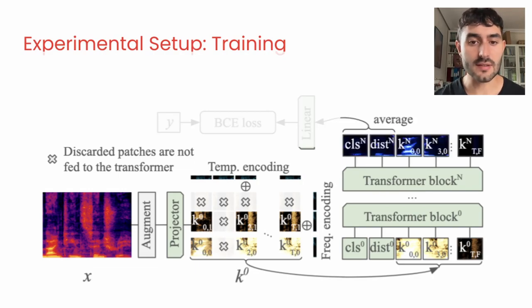Finally, the average of the class and distillation tokens are passed through a linear layer that predicts 400 music style labels from Discogs400K, an in-house dataset of 3.3 million tracks annotated with Discogs metadata.